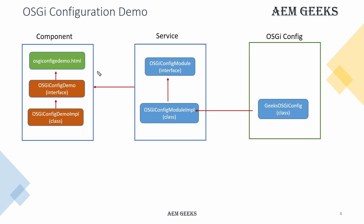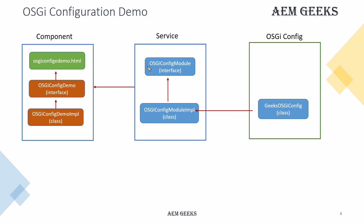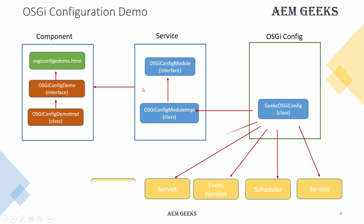Now you will see this is a completely separate file. Earlier I wrote this configuration inside this service, but now we have a completely separate file and we are just referring to it. You can refer to this in any backend component — any type, like other services, schedulers, event handlers, servlets, and workflow processes — whatever backend component you have, you can refer to it.